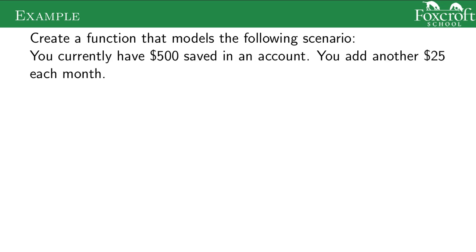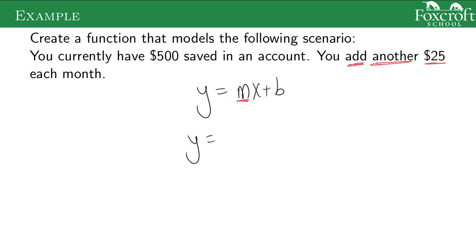Now we're going to look at word problem scenarios. The only thing you have to think about is: am I adding the same thing every single time, or am I multiplying by something? That tells you if it's linear or exponential. Scenario: you currently have $500 saved and you add another $25 each month. Every month I'm adding the exact same amount, so this is a linear equation. The slope is $25 — the thing you're adding — and the y-intercept is $500, where you start. So that is the linear equation that models this scenario.